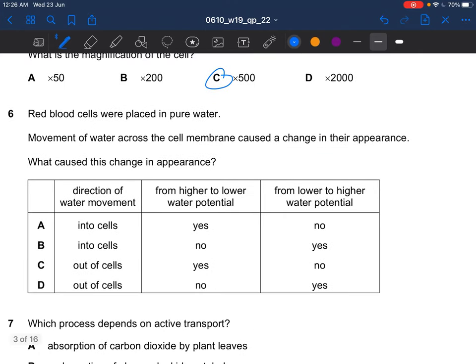Next question, red blood cells were placed in pure water. Movement of water across the cell membrane caused a change in their appearance. What caused this change in appearance? This is osmosis. Osmosis is the net movement of water molecules from a region of higher water potential to a region of lower water potential. Let's say this is the red blood cell, then you have the water. Since this is higher water potential, your water would move from a region of higher water potential to lower, which is into the cell. So the answer for question 6 would be A.